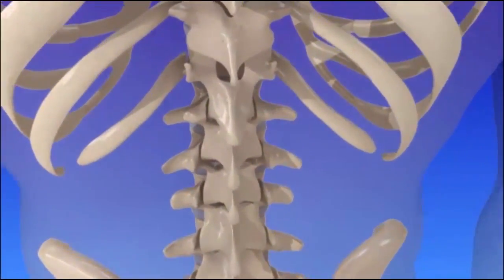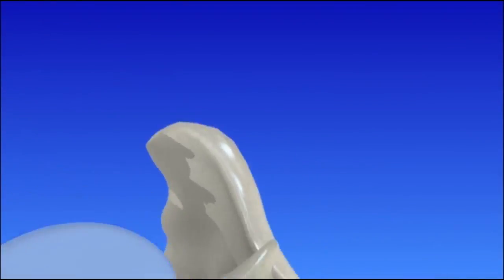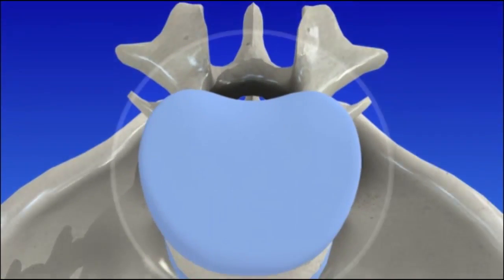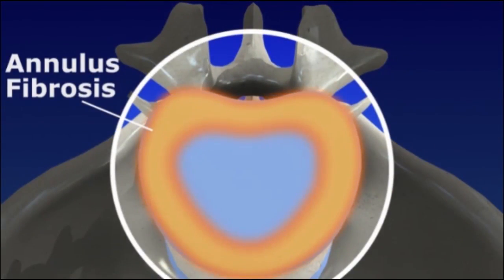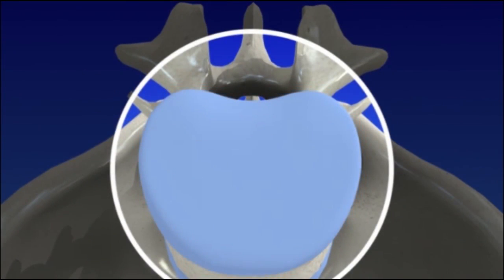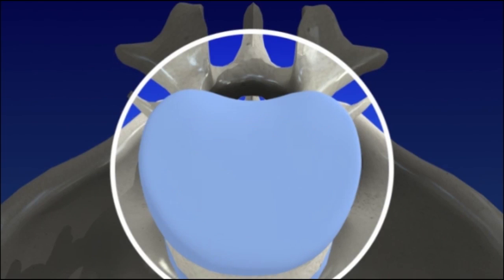The discs are made out of strong connective tissue. The tough outer layer is called the annulus fibrosis. The center of each disc, the nucleus pulposus, is gel-like in its normal state. A healthy disc acts as a cushion between the vertebrae.